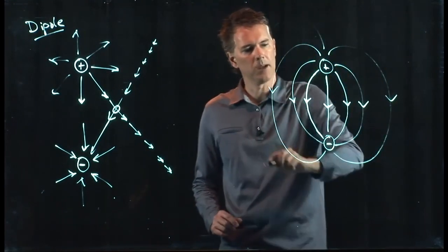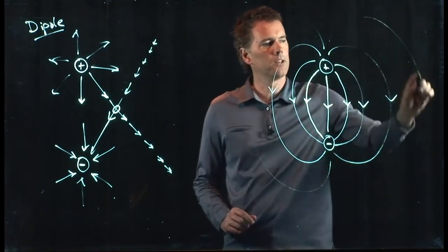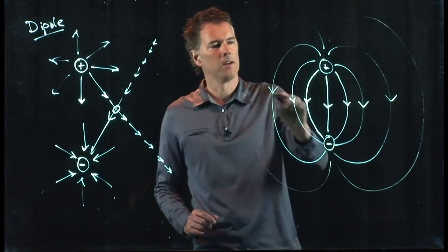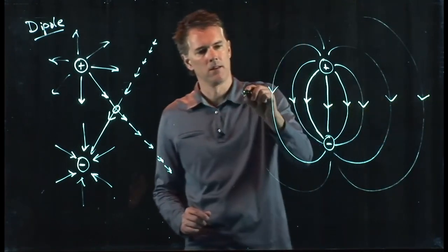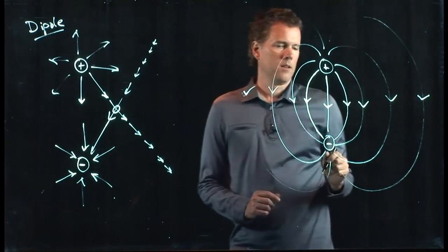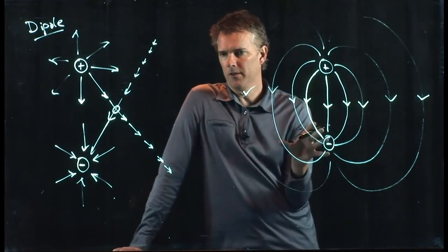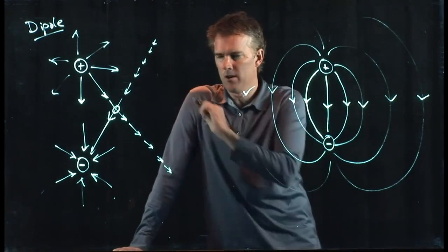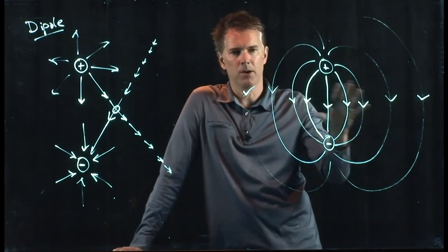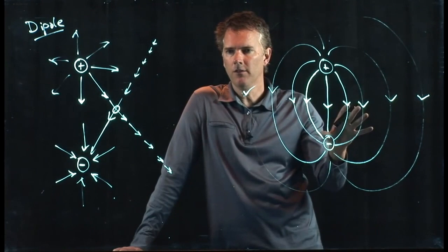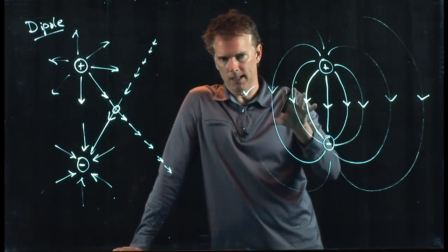And they keep coming out of the top and eventually going into the bottom. And now we've drawn vector fields that look a little different than we had before, right? We had a whole bunch of arrows before, but now I have a bunch of lines. This is an equivalent way of drawing electric fields.